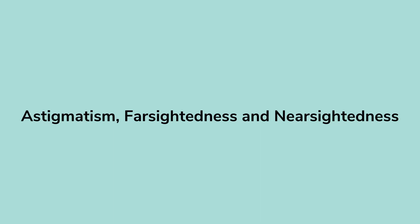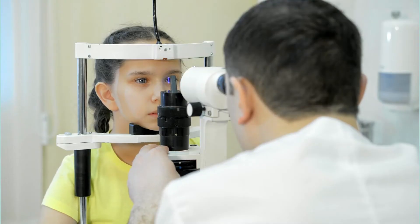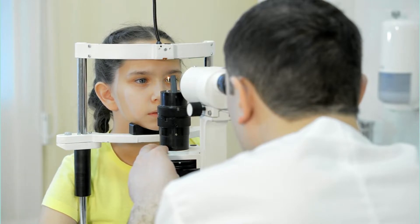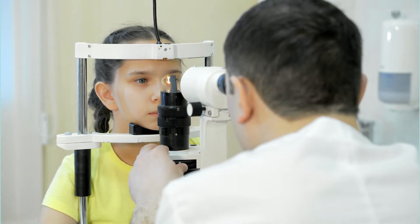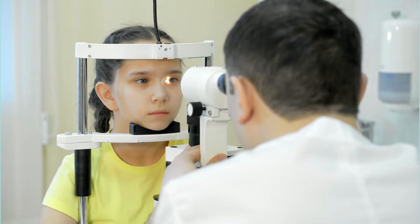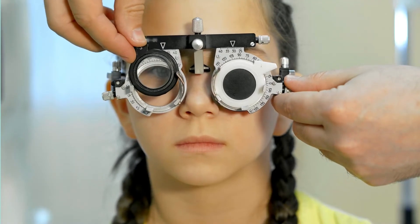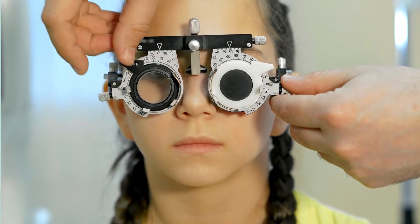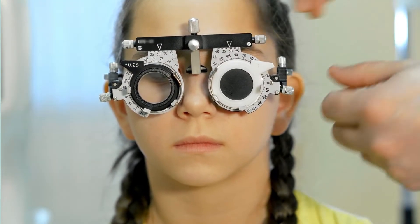Astigmatism, Farsightedness, and Nearsightedness — these three conditions, or refractive errors, are the most common eye problems in children and adults and are most often caused by abnormalities in the surface of the eye that prevent light from properly being focused on the retina. They can be treated with timely diagnosis by using prescribed glasses or lenses by the doctor.